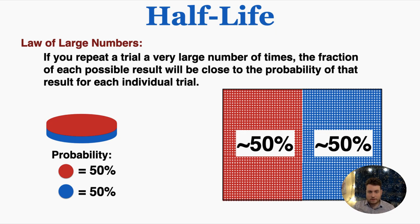So this is what the law of large numbers is telling us. It's telling us that the fraction of each possible result — the fraction of red results and blue results — will be very close to the probability of those results. So the probability of red is 50%, and if you flip the coin a million times, the odds are very good that about 50% of those flips will be red and about 50% will be blue. This is a way that we can still make predictions about fundamentally random events.